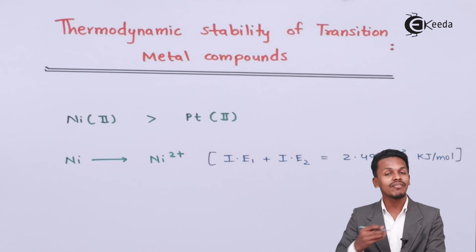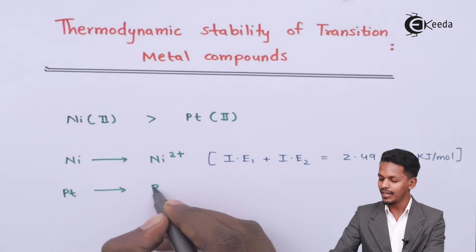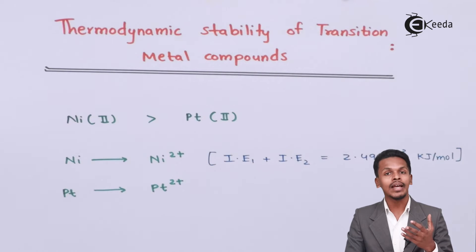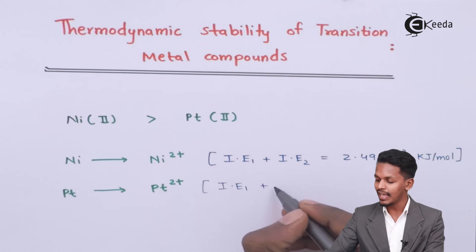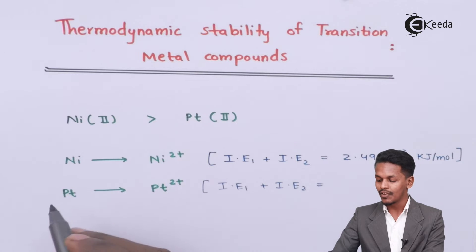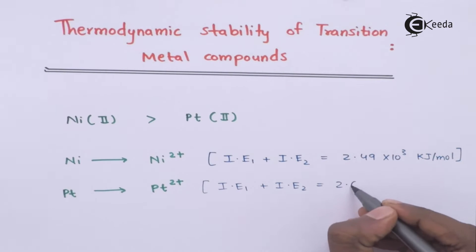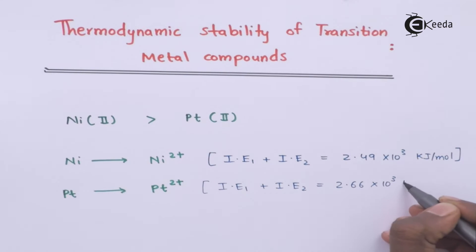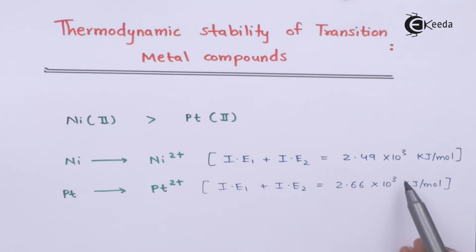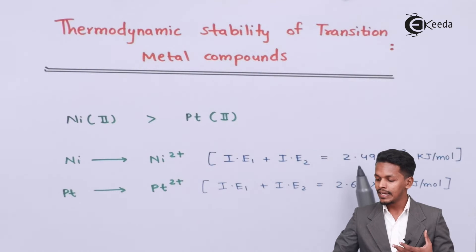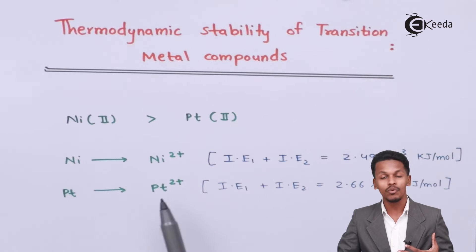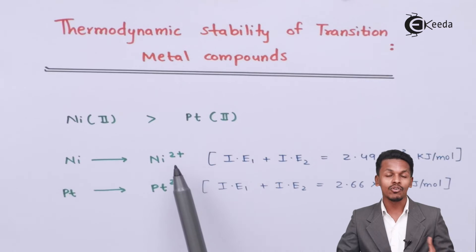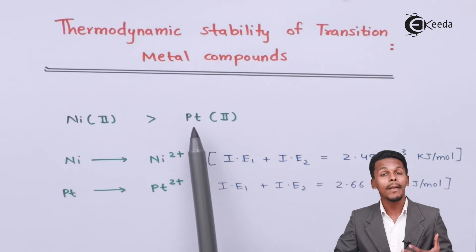If we talk about converting platinum to Pt²⁺, we also require the first and second ionization enthalpies. In that case, the total ionization enthalpy is 2.66 × 10³ kilojoules per mole. Comparing the two, conversion of nickel to Ni²⁺ requires lesser energy than conversion of platinum to Pt²⁺, which means nickel(II) compounds are more stable than Pt²⁺ compounds.